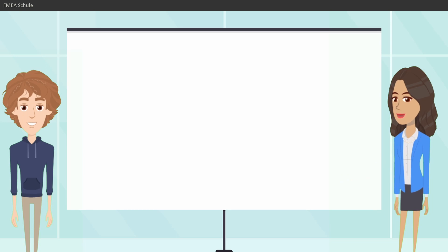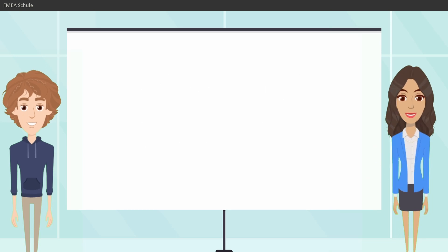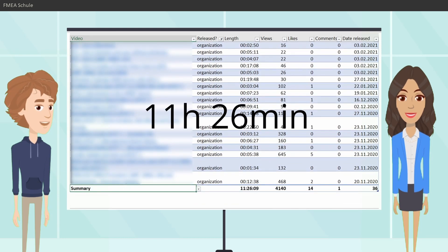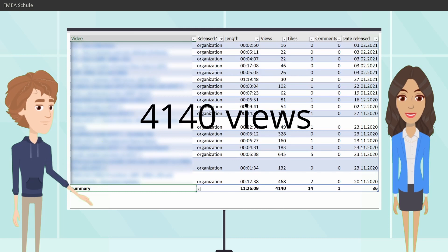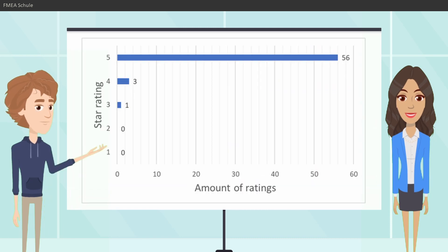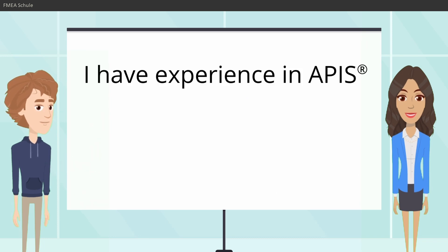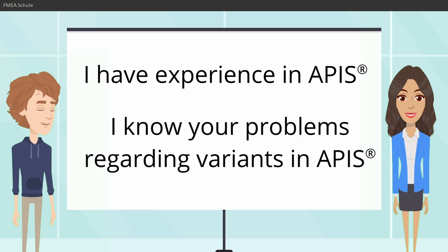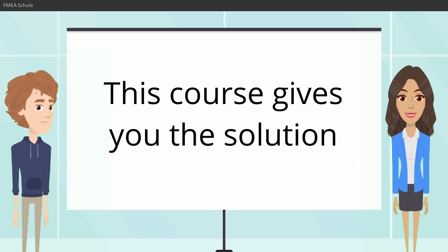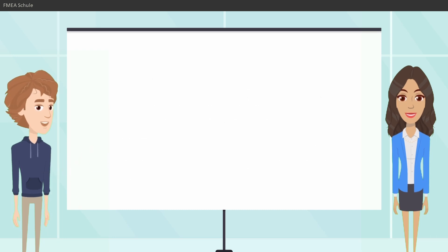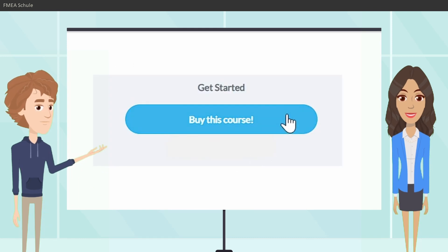One last question Dimitri, why should I buy your course? I already created 36 videos with a total length of 11 hours and 26 minutes, 4,140 views, and with 60 video ratings with an average of 4.92 out of maximum 5 stars. So I have experience in APIS and FMA, I know your problem regarding APIS and variants, and this course gives you all the solution you need. If you are not satisfied I give you a 30 day money back guarantee. Just write me an email and I will refund your money. And now click on the buy this course button.